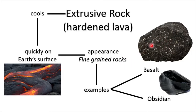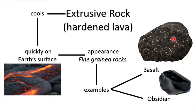You cannot find much of the different minerals in one rock, so that's why they look fine — the grains are quite fine compared to the other type of igneous rock. Examples of extrusive or volcanic rocks include basalt and obsidian. Obsidian looks like glass. These two types of rocks are examples of an extrusive rock, which is a type of igneous rock.